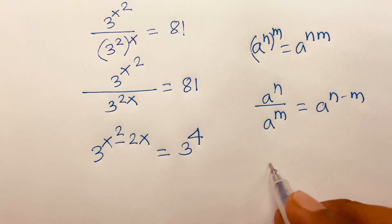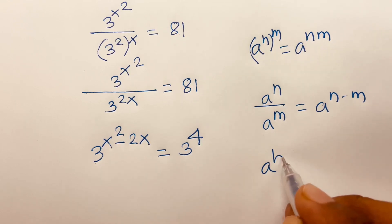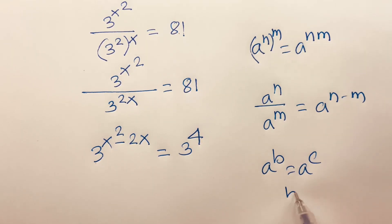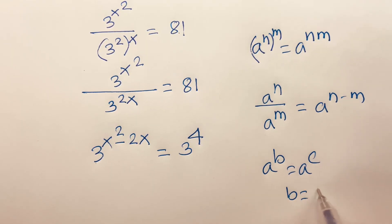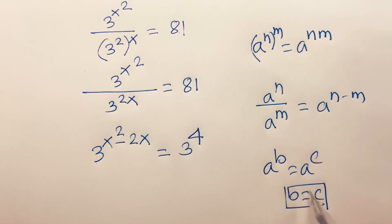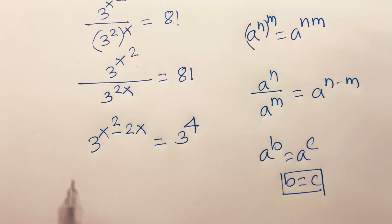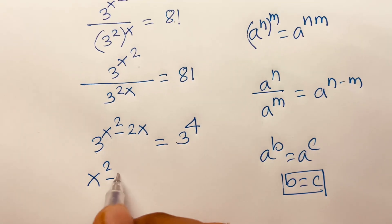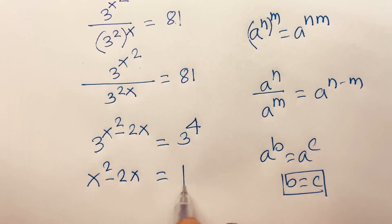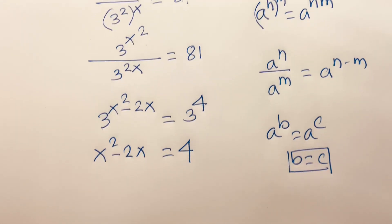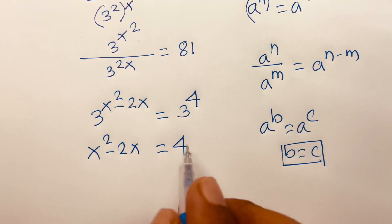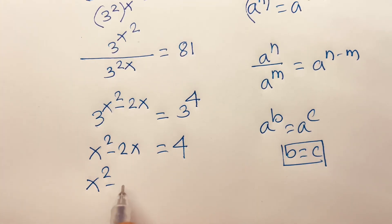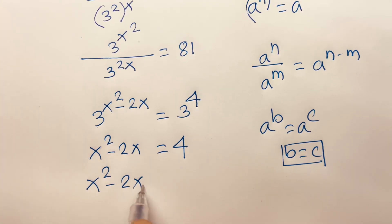Then I can say, since the bases are the same, if a to the power b equals a to the power c, then b equals c. According to these rules, x squared minus 2x is equal to 4. Then if I move this 4 to the left side, we find x squared minus 2x minus 4 is equal to 0.